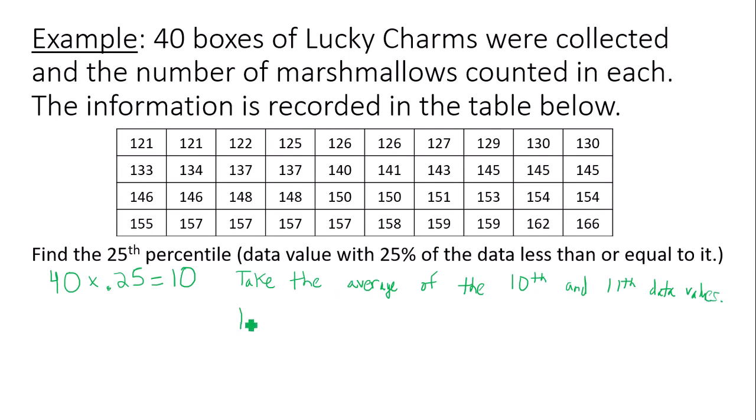So that means my 25th percentile would be an average of 130 plus 133. That is my data value in the 10th position, data value in the 11th position. And we will divide by 2 since we are taking an average of 2 values. So 263 over 2, which gives me 131.5.